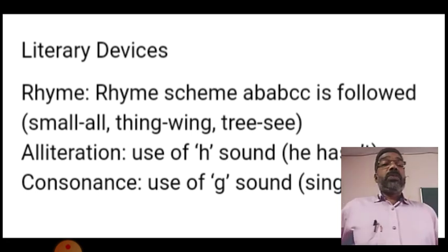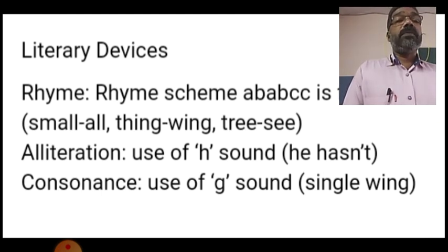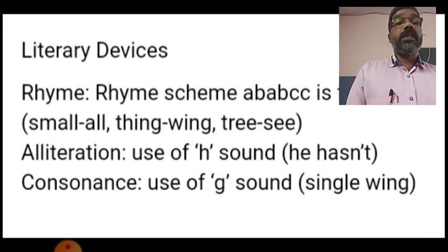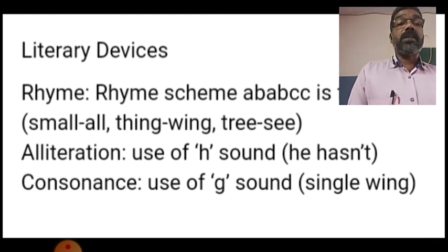Alliteration is used again in this stanza. Words beginning with the H sound: 'He' and 'Hasn't' — both words begin with the consonant sound H. Then consonance is used — a consonant sound used in different words in the same line. The use of G is seen in 'single' and 'wing.' G is used in both words. So consonance is also used in this stanza as a literary device.